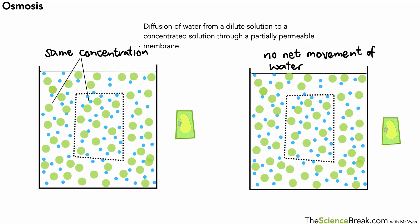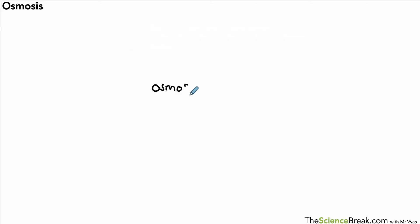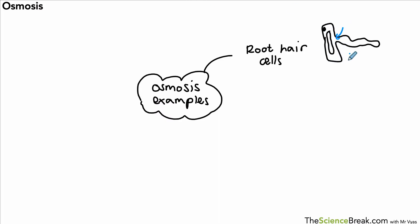So this is the idea of osmosis and a couple of examples where you could explain what's going on with osmosis. Let's have a look at where we might see some other examples. The first one is in root hair cells in the soil. This is how water moves into plants.